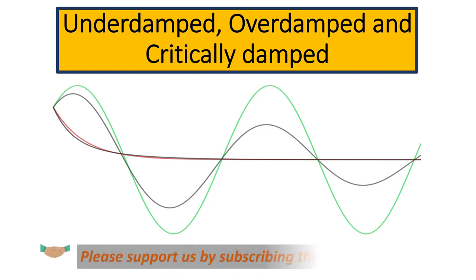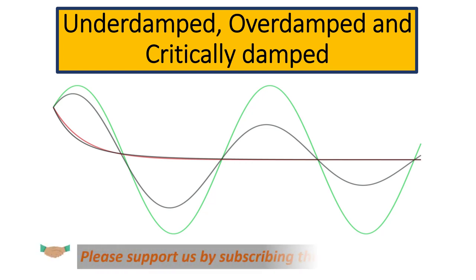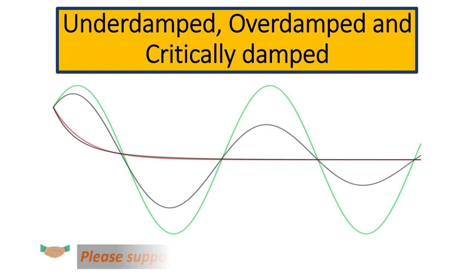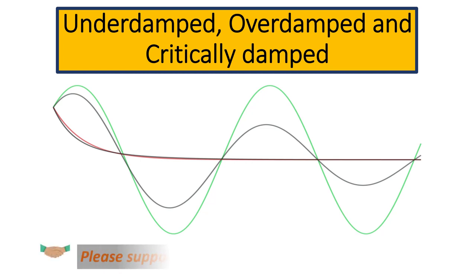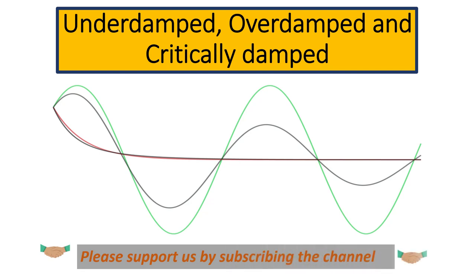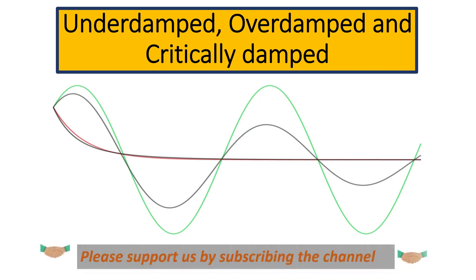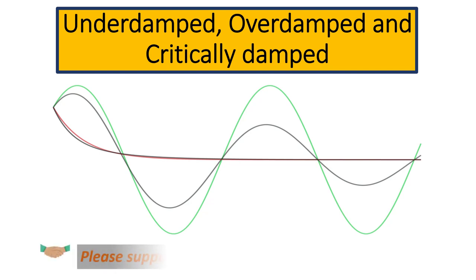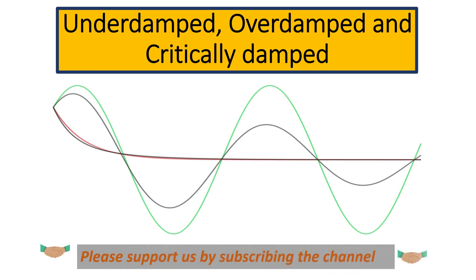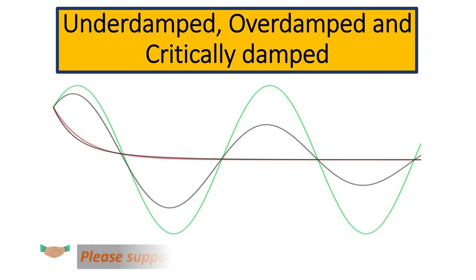Under the underdamped system there are different sub-categories. If the damping factor is equal to zero, if the damping factor is positive but smaller than one, or if the damping factor is smaller than zero — a negative value.